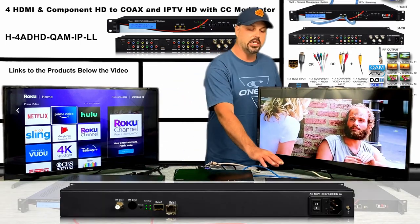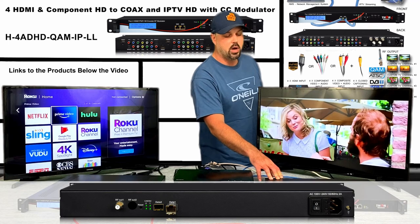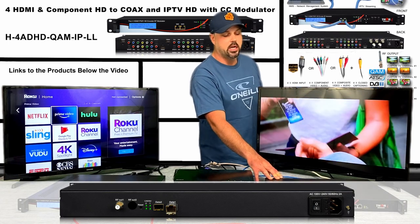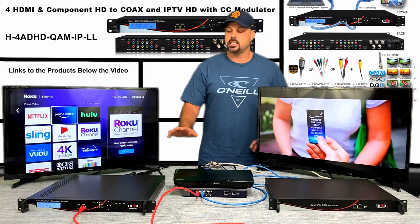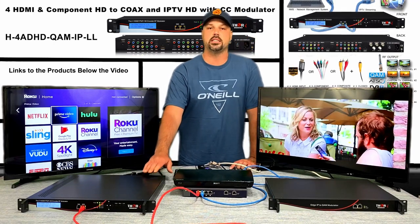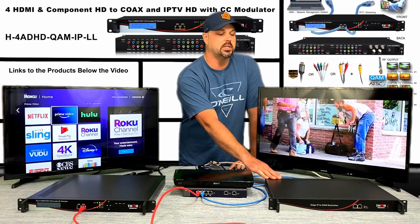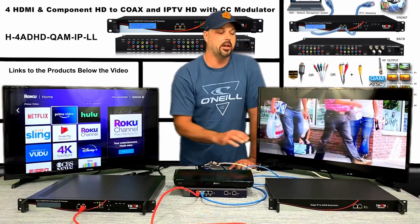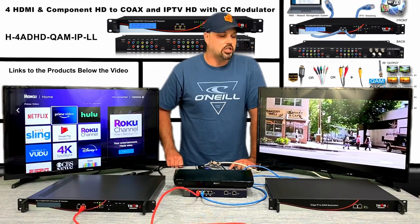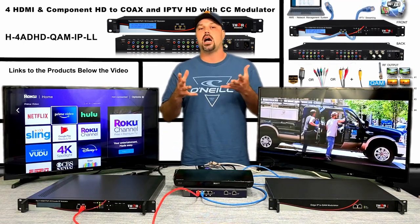This device I wanted to show you guys today is a one RU IP edge QAM modulator. What that means is this device is essentially doing the decoding of the video that the encoder is producing. This edge QAM — I believe this one is 16-channel; we also have a 32-channel version here at Thor.